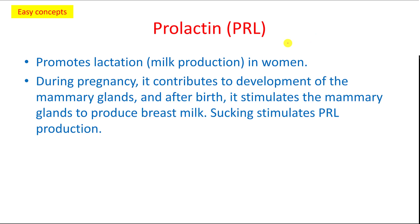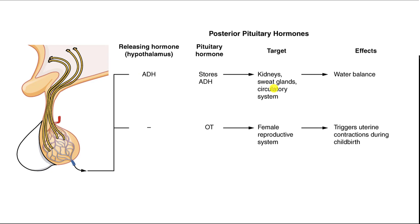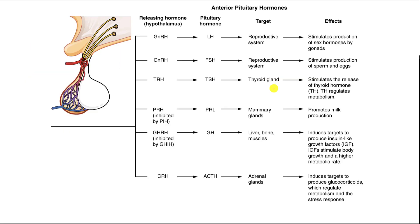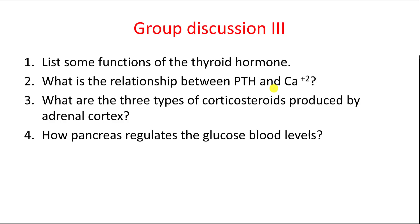Then there is prolactin, which promotes lactation — milk production in women. During pregnancy, it contributes to the development of the mammary gland. This is a summary of all the hormones from the anterior pituitary and the posterior pituitary. In the following video, we'll continue talking about the thyroid and the adrenal glands.